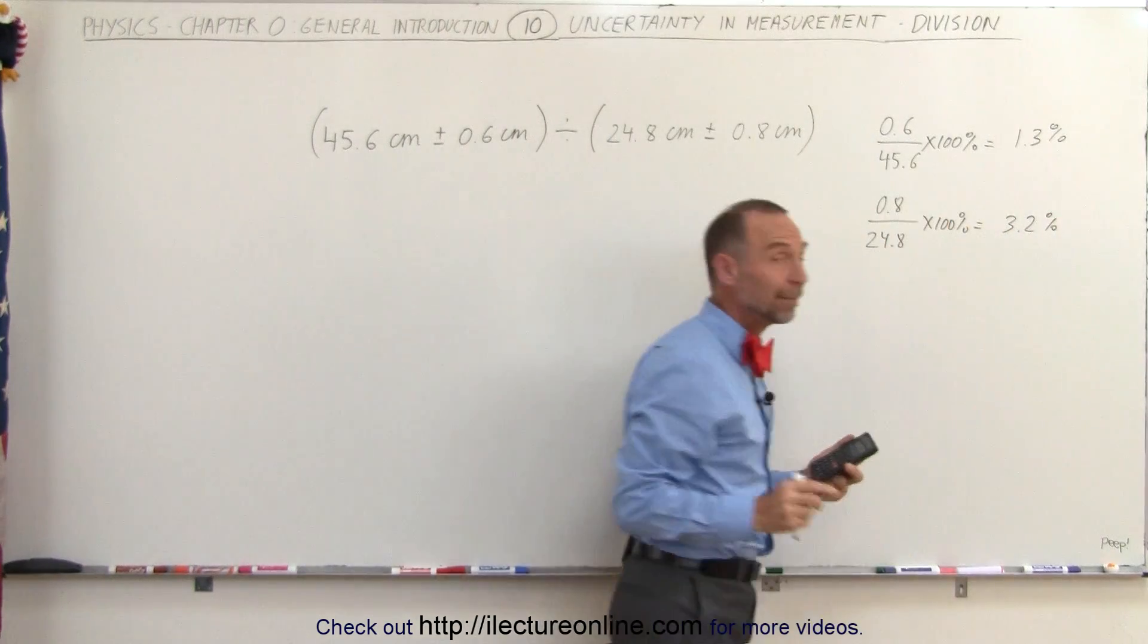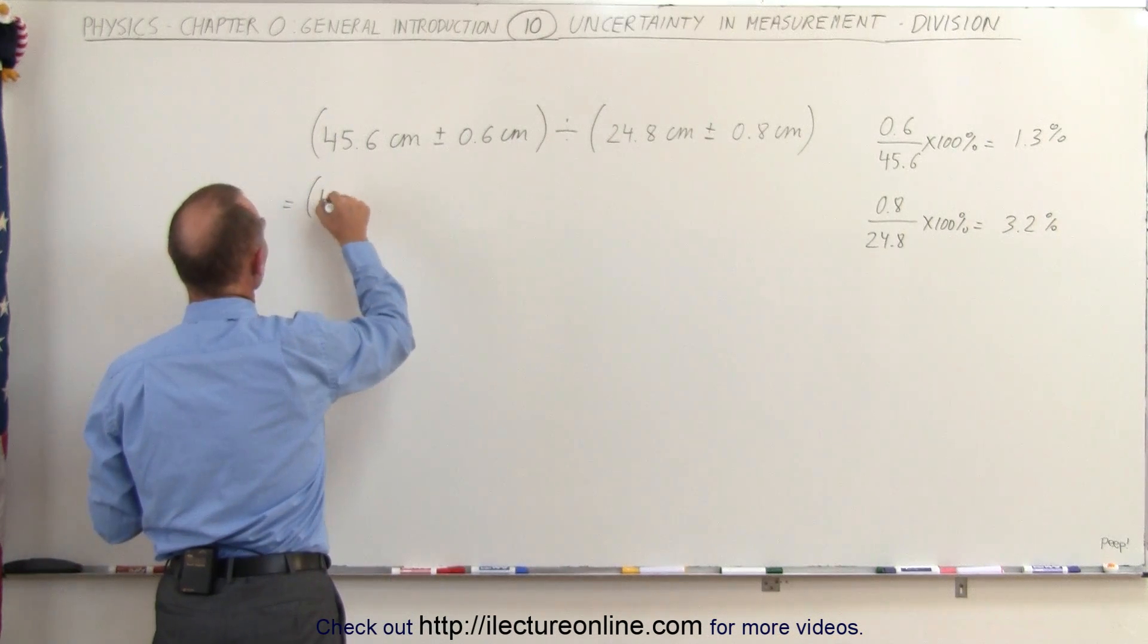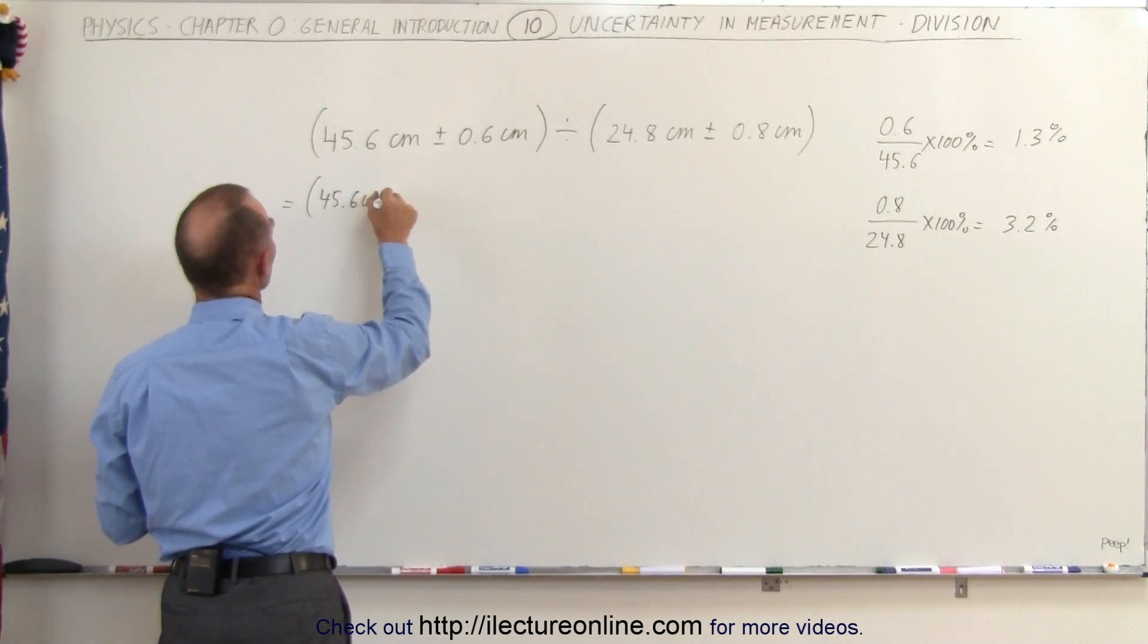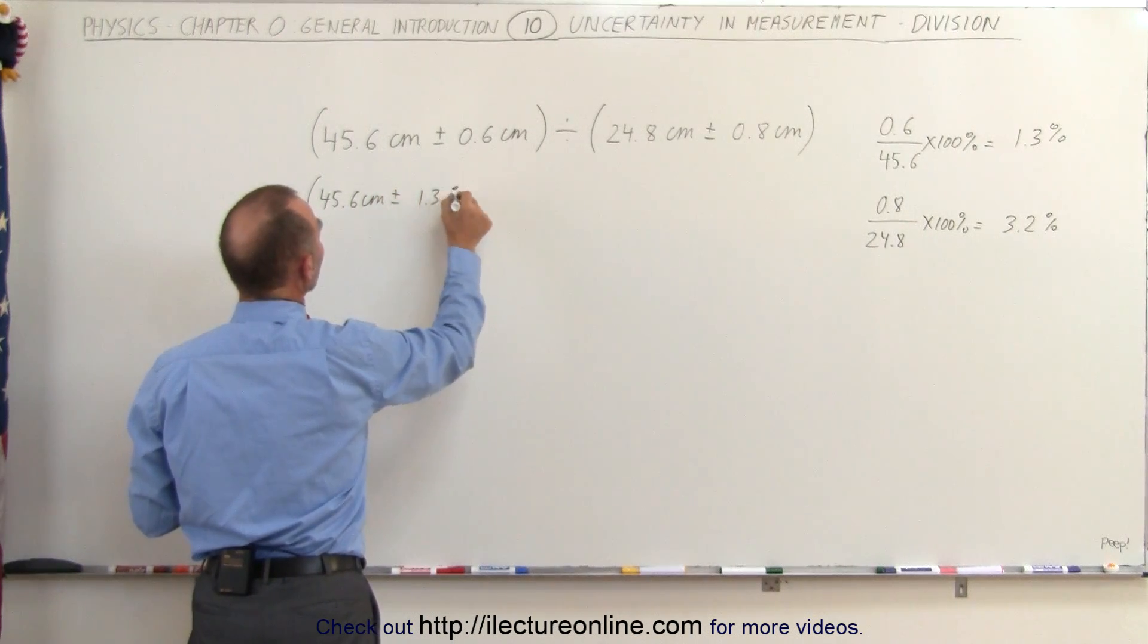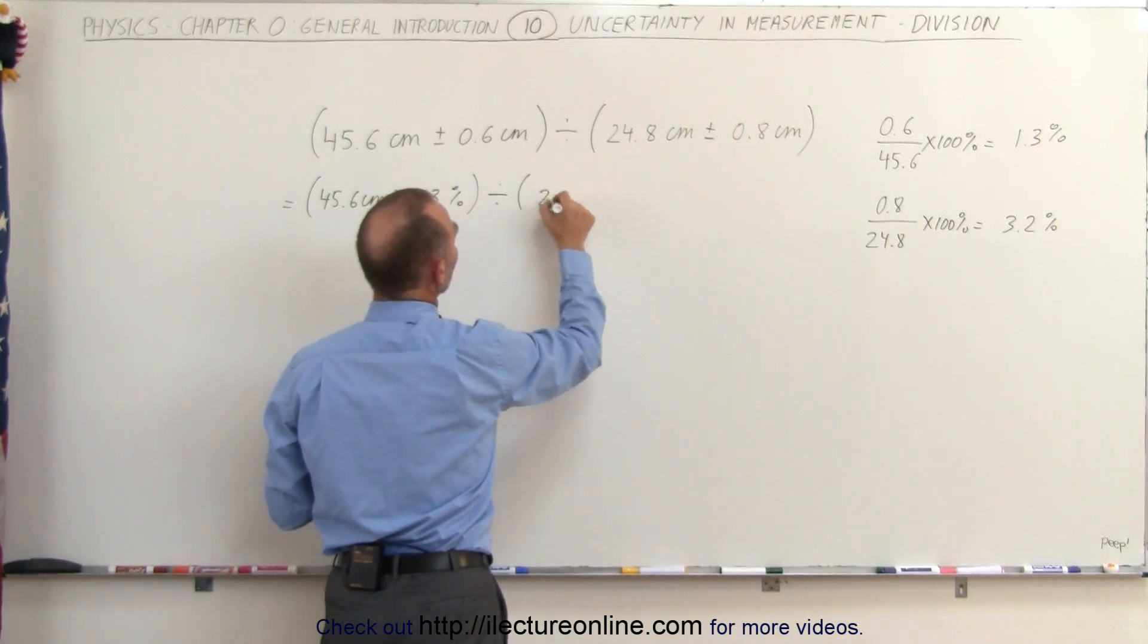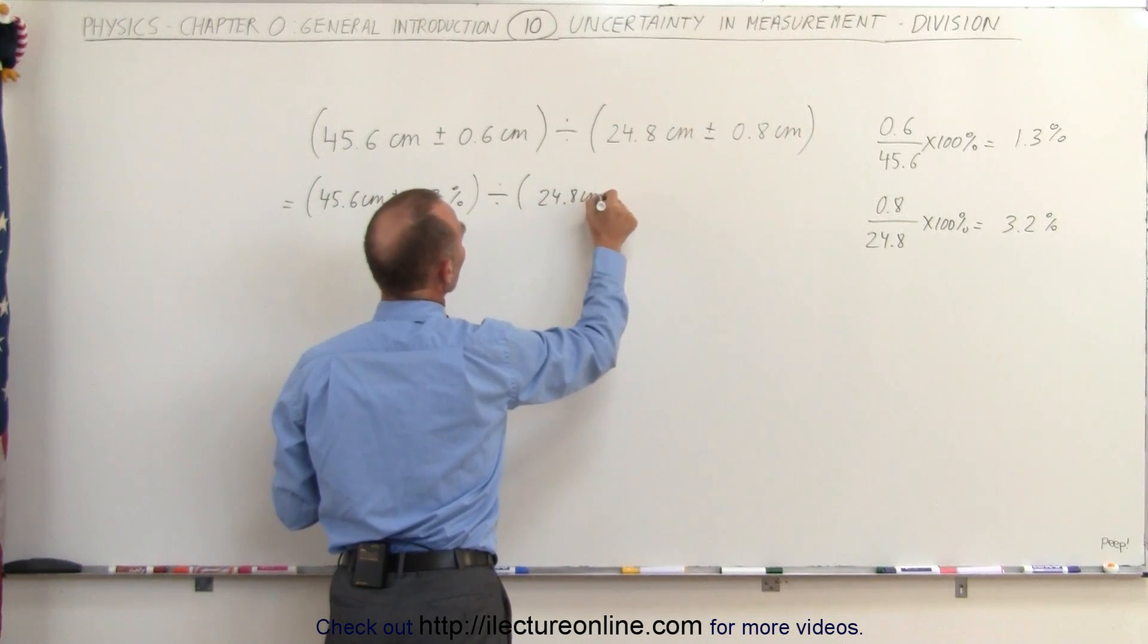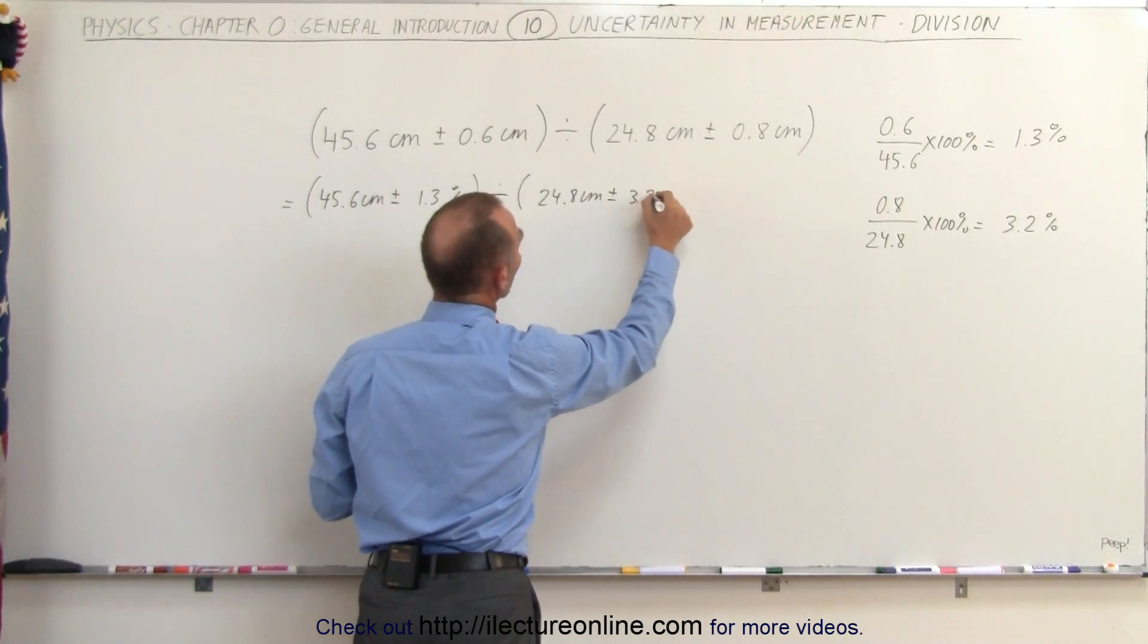So that means we're going to rewrite this as 45.6 centimeters plus or minus 1.3%. That would then be the uncertainty divided by the quantity 24.8 centimeters plus or minus 3.2%.